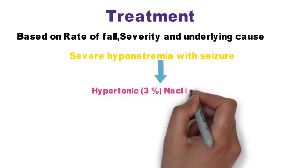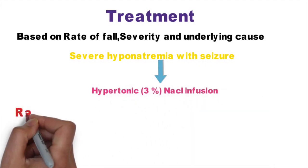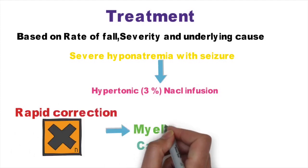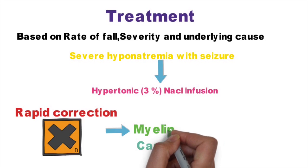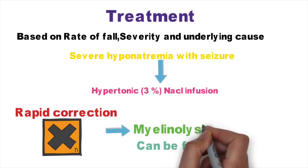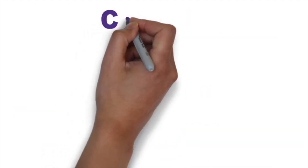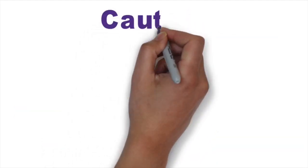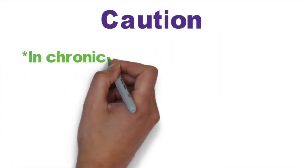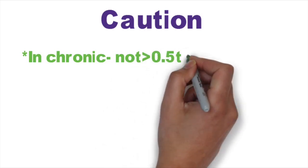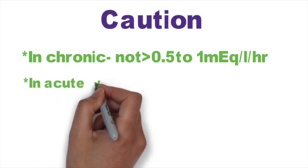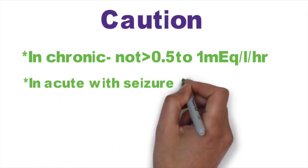With rapid correction of chronic hyponatremia, there will be shrinkage and detachment of neuronal cells and myelinolysis, which can cause permanent damage to midbrain structures. So in chronic hyponatremia, the rate of rise should not exceed 0.5 to 1 mEq per hour — that is, no more than 12 mEq in 24 hours. In acute hyponatremia with seizure, a rise of 2 mEq per hour is tolerable.